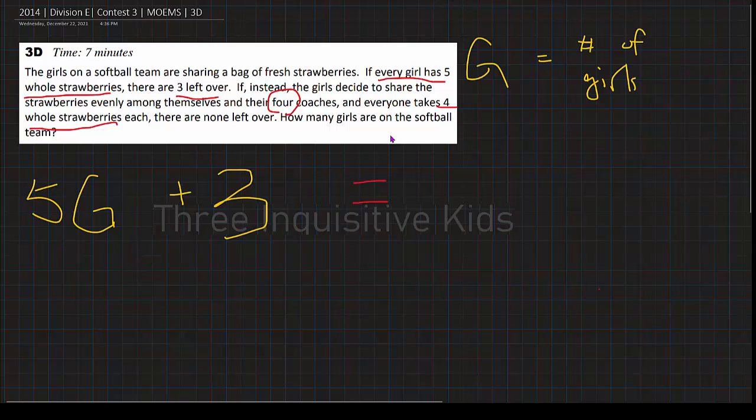On the other side, if the girls decide to share their strawberries evenly among themselves and their four coaches, which would be G plus 4, the number of girls plus their four coaches, each of them will take four and there are none left over. So times 4.